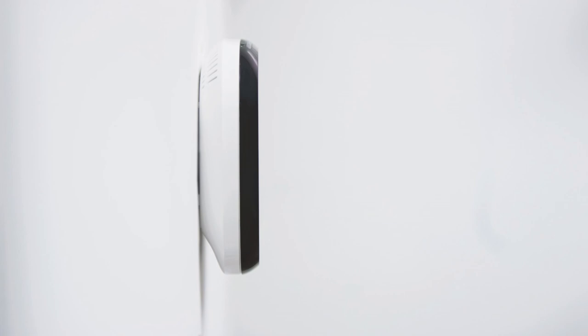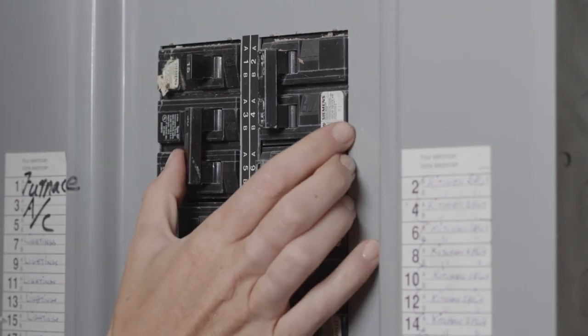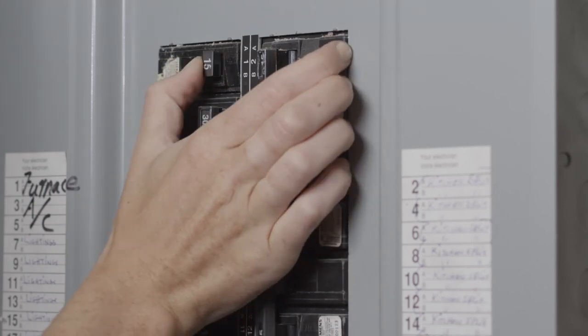Your Ecobee 4 is now ready for the next step. Turn your HVAC equipment back on at your circuit breaker and your Ecobee 4 will come to life.